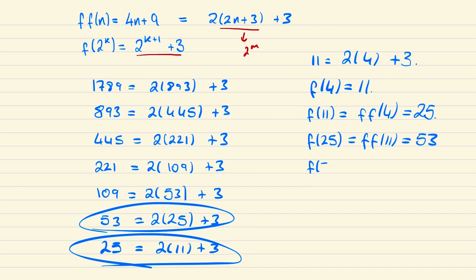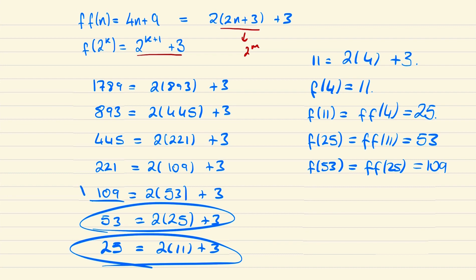And f(53) will be f(f(25)) which once more will just be 109. And hopefully now you can spot the pattern that we're just working our way upwards until we arrive at f(893) = 1789.